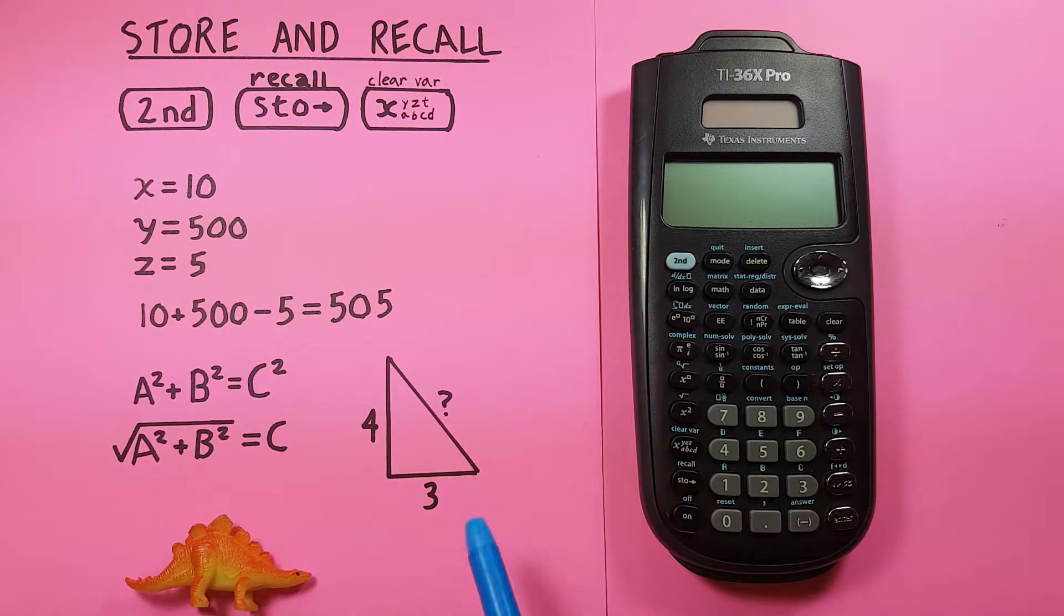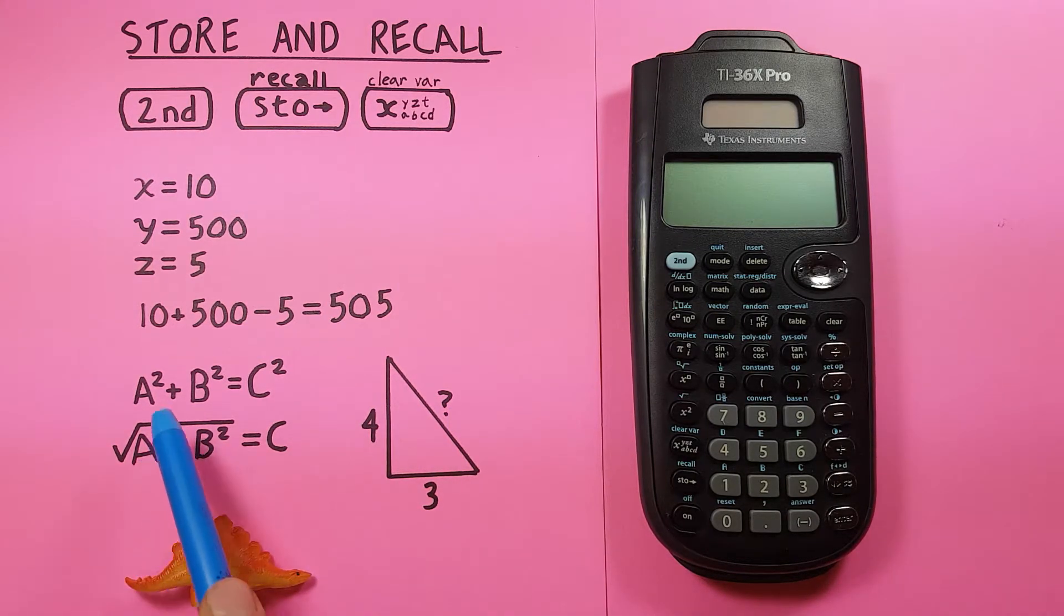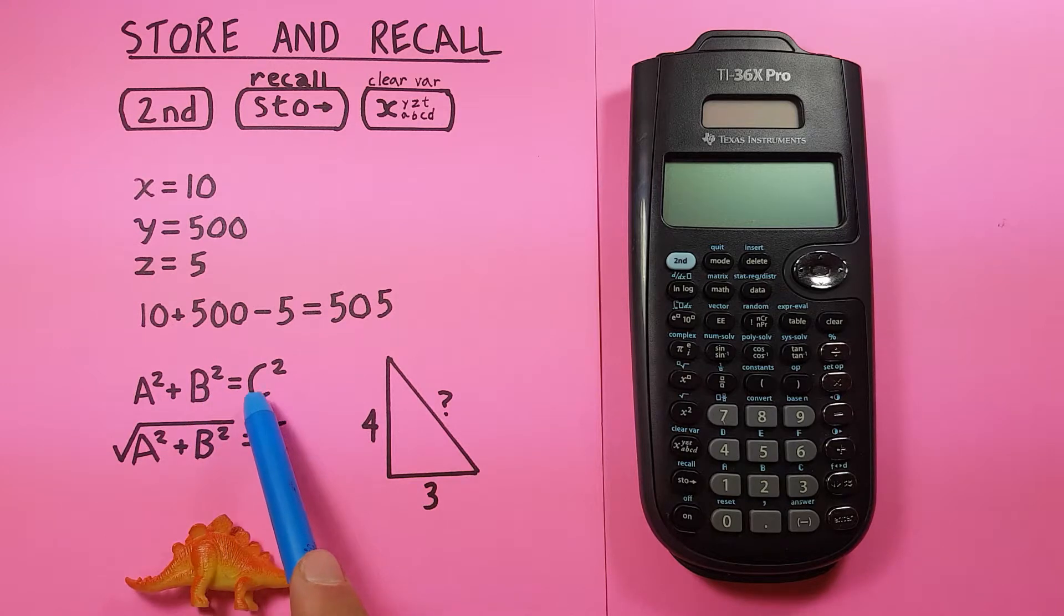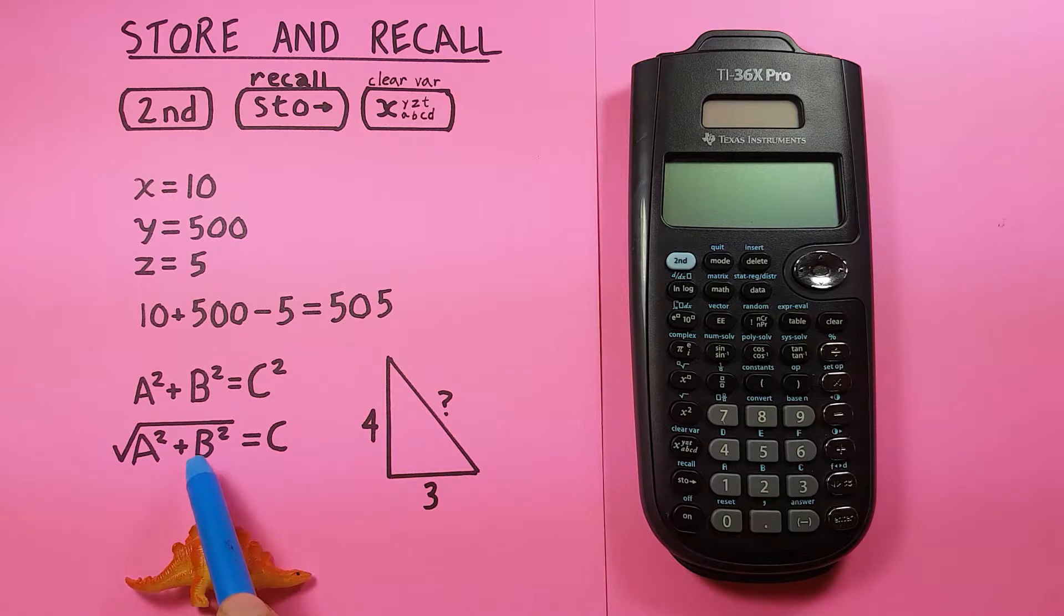If we had a triangle like this, and wanted to determine the length of this side, we know we can use Pythagoras, which is a squared plus b squared equals c squared, or rewritten, the square root of a squared plus b squared equals c. This is our c here.